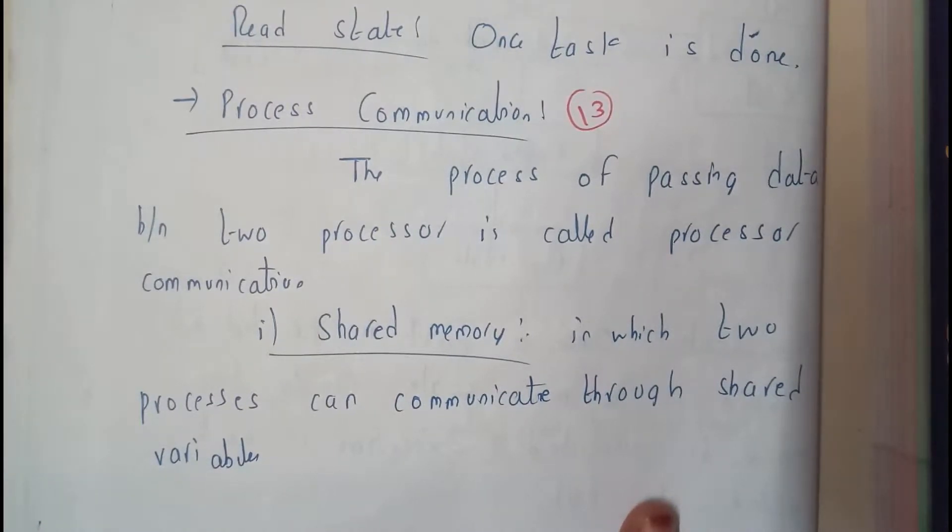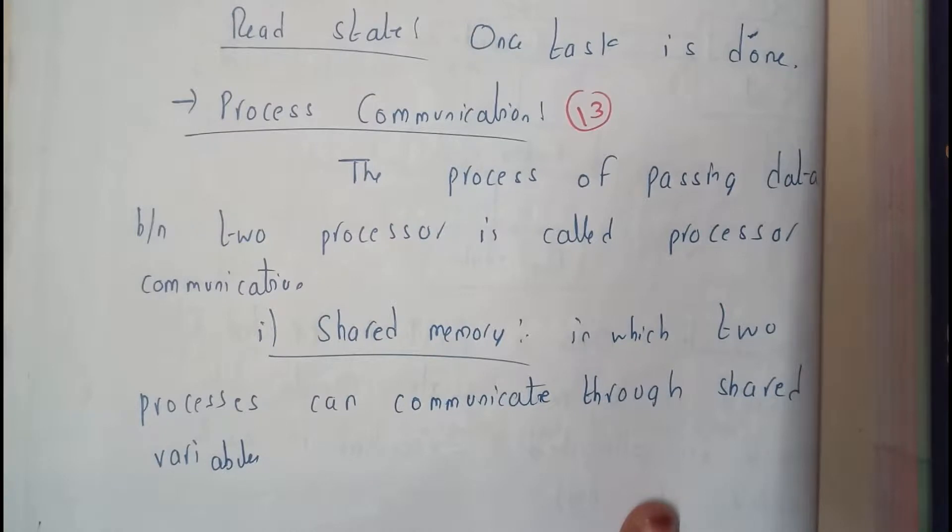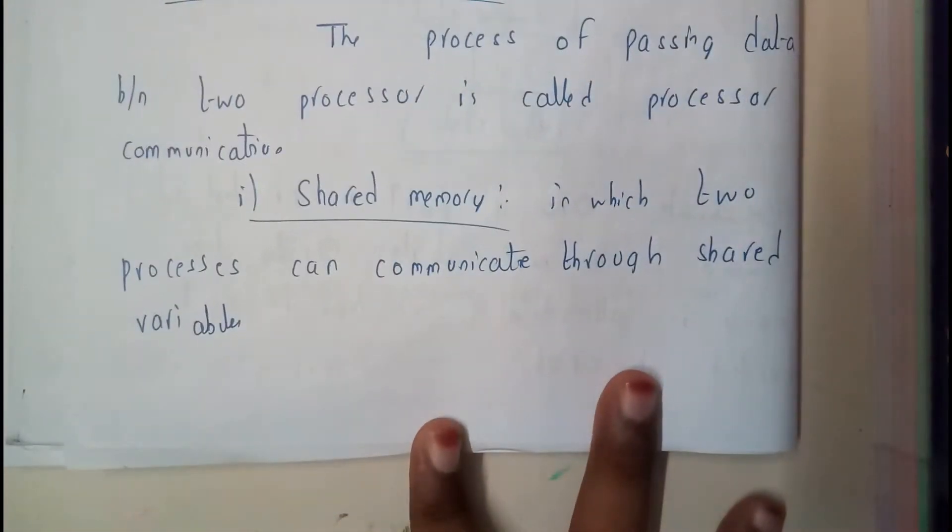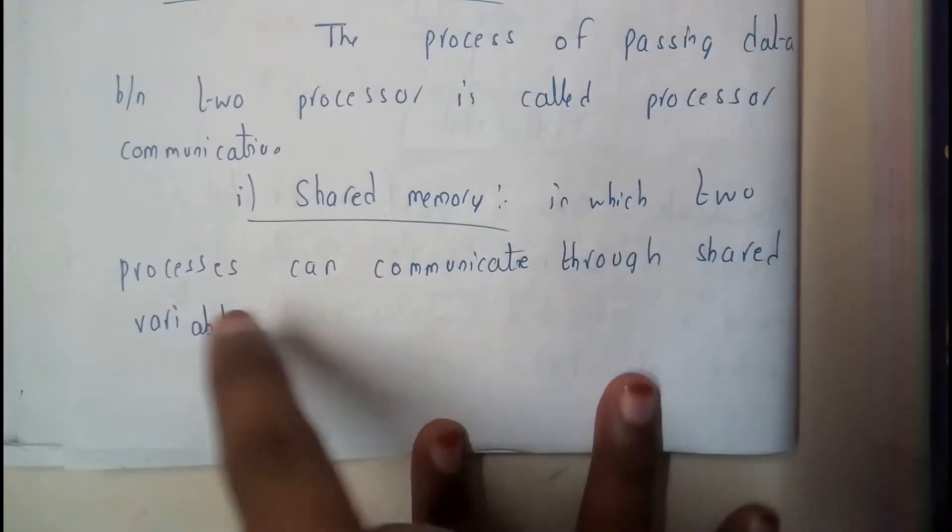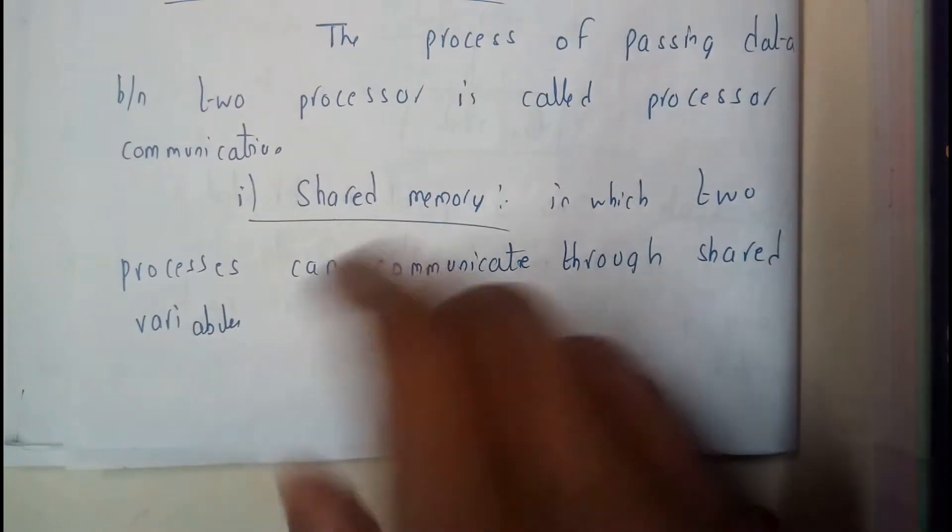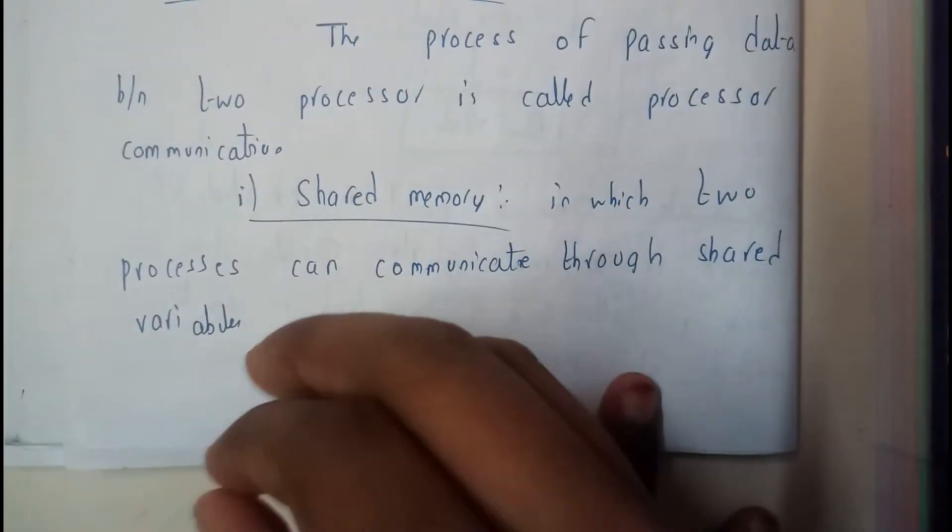Right off the bat, this can be done in two ways, guys. The first method will be shared memory, in which two processors can communicate through a shared variable. So there will be a block or few variables which can be shared among them.